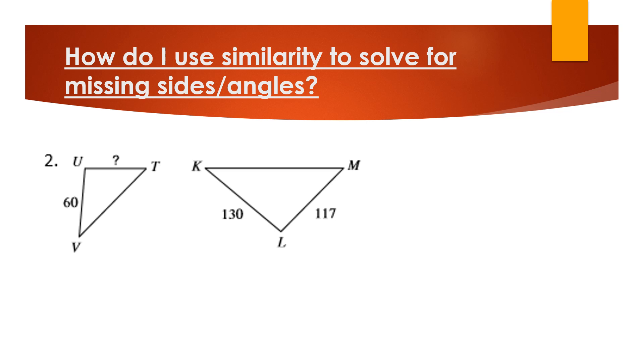So over here, how do I use similarity to solve these? In this case, you really have to focus on what the corresponding pieces are. Now, rightfully so, we should have some angle markings here to help us out. So we should know that those angles are congruent to one another so that we can then realize that if those angles are congruent, those are our corresponding pieces. So you might want to add those angle markings in. And then from there, x is over 60 as 117 is over 130. So you cross multiply and solve and there you go.